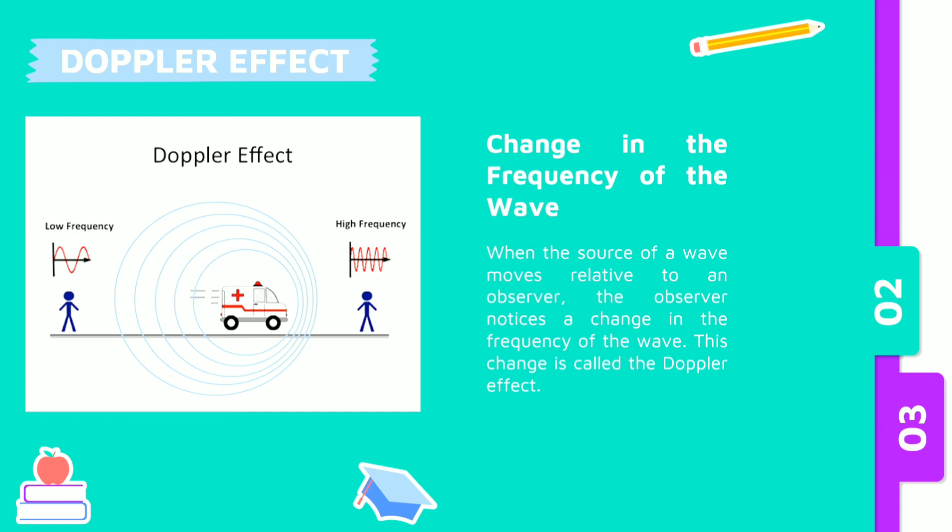For example, when an ambulance that is sounding its siren moves towards a person who is standing on the edge of the road, the sound will be heard even higher. But when the ambulance moves away, the sound of the siren will get smaller.